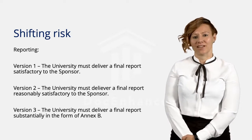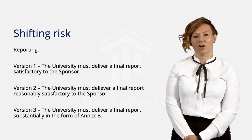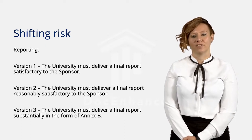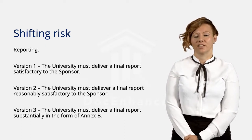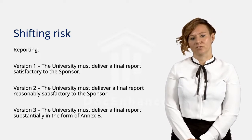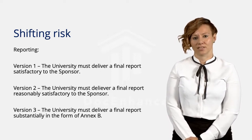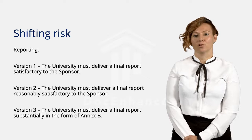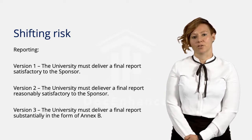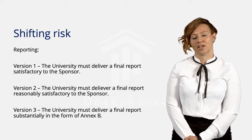Another familiar aspect with research projects is reporting obligations. Version 1 is high risk for the university as the standard of 'satisfactory to the sponsor' is an unfettered discretion for the sponsor in deciding whether the report is acceptable. Version 2 is somewhat less risky for the university as the standard has changed to what the reasonable person would think is acceptable — so it's no longer just the sponsor's opinion. Version 3 substantially reduces the risk for the university as the university now knows exactly what is required.